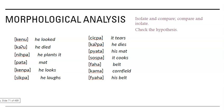Now let's look at this data. When we're looking at the meanings, we see: he looked, he died, he plants it, he looks, he laughs, it tears, he dies. One thing we can consider is whether we can tell a difference between verbs in the present tense — in English those are marked with an 's' — and verbs in the past tense, which we mark with a 'd'. So let's compare. Do you see a pattern? What the morpheme might be, what the affix might be that marks present and past tense in this language?